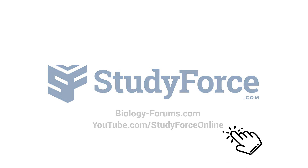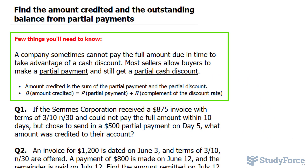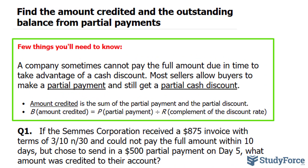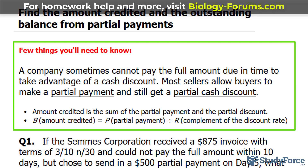In this lesson, I'll show you how to find the amount credited and the outstanding balance from partial payments. There are a few things you'll need to know before we start. A company sometimes cannot pay the full amount due in time to take advantage of a cash discount, so most sellers allow buyers to make a partial payment and still get a partial discount.